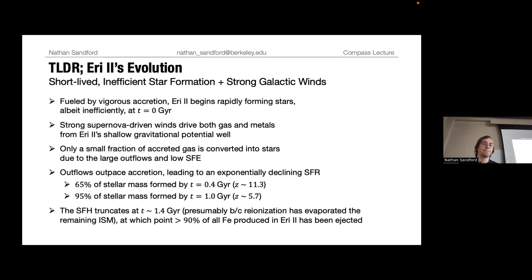Because outflows over time outpace the accretion of new gas, the star formation history decays exponentially, such that roughly two-thirds of Eridanus II's stellar mass formed within the first 400 million years. And it had formed nearly all of its stars by one billion years, which is in good agreement with what we found from the previous data set of just the photometry of Eridanus II. The star formation history we believe truncates a little after 1.4 billion years. We think that this is because of both the energy input through these massive stars and supernovae that exists both in Eridanus II and potentially surrounding galaxies effectively evaporates the remaining gas that Eridanus II has such that it can't form new stars.